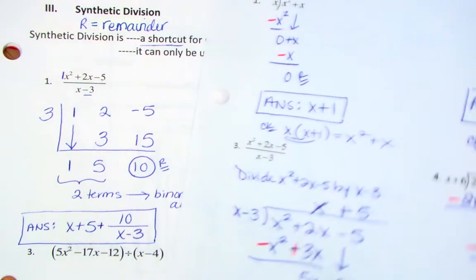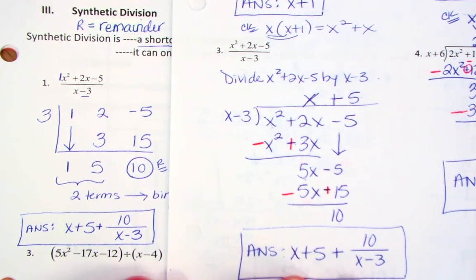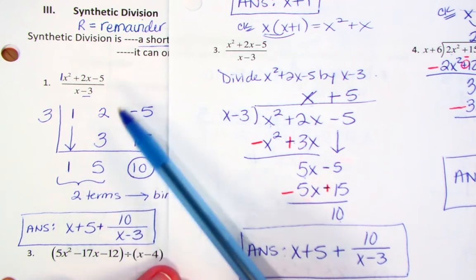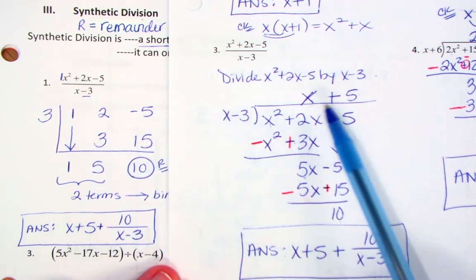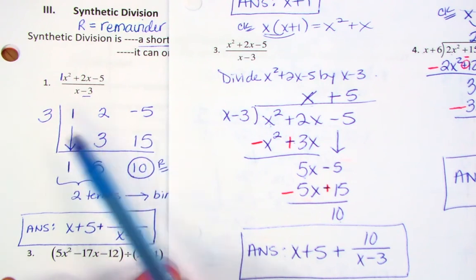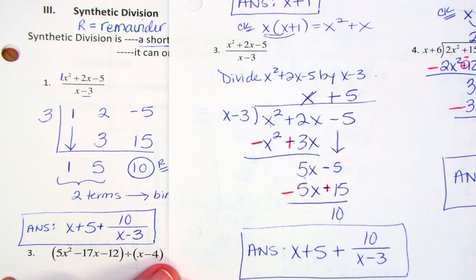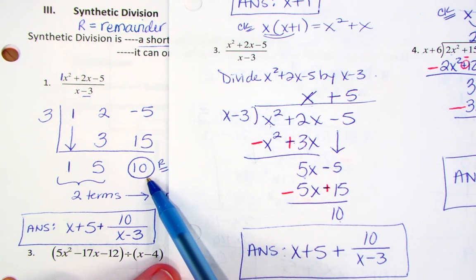Just to put it side by side — this was a question we divided last class with long division. Here's the synthetic division on this side, and here's what we got with long division. You can see we end up with the same answer, but this way is a shorter way — it's our shortcut. Our remainder with synthetic division is this last number in the row.